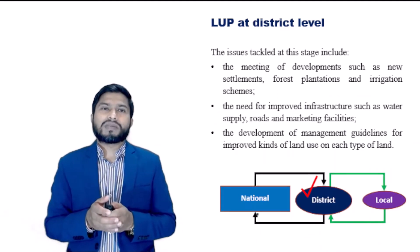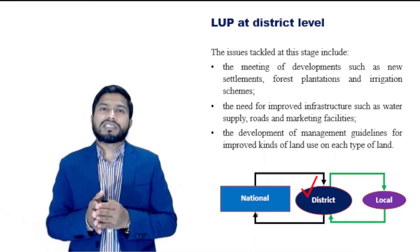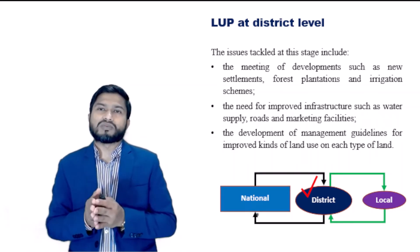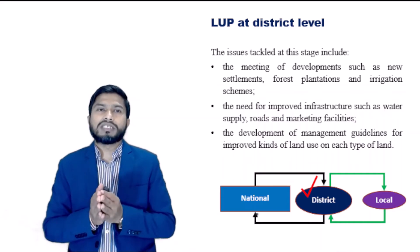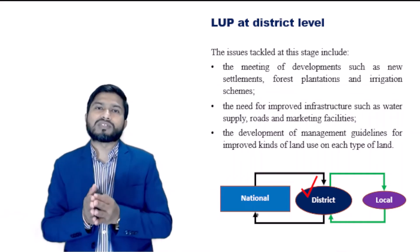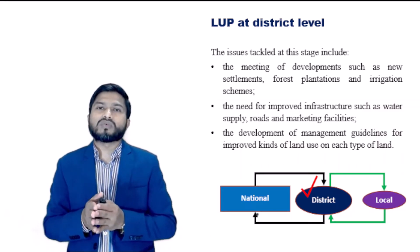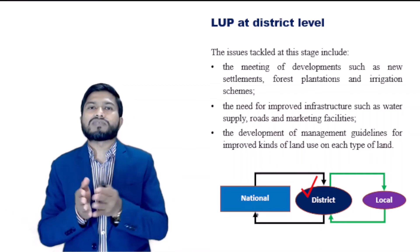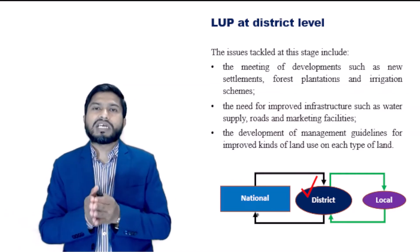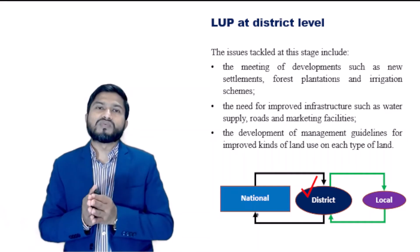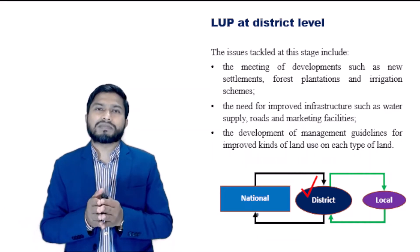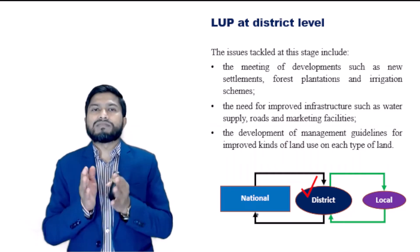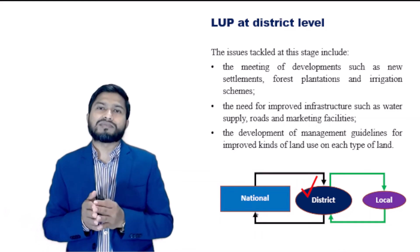District level land use planning: when planning is initiated nationally, national priorities have to be transferred into local plans through district level land use planning. Conflicts between national and local interests will have to be resolved at this stage. The kinds of issues tackled include the need for development such as new settlement, forest plantation and irrigation schemes, the need for improved infrastructure such as water supply, roads and marketing facilities, and the development of management guidelines for improved kinds of land use.